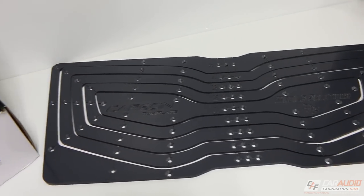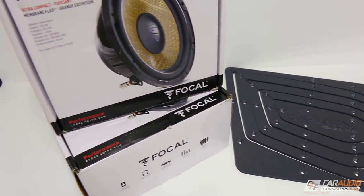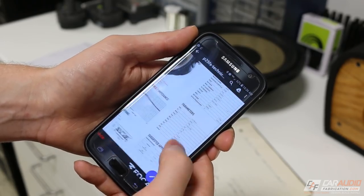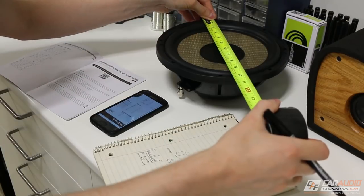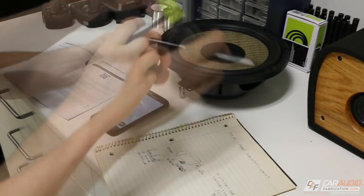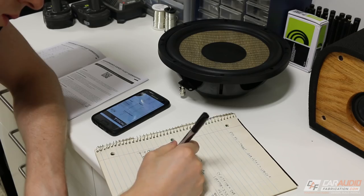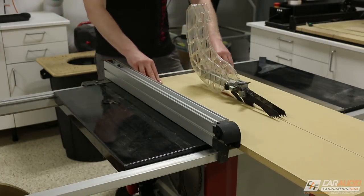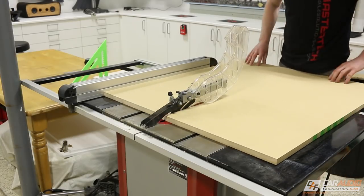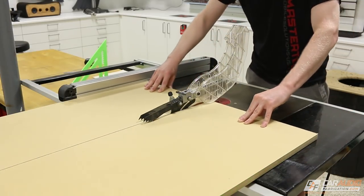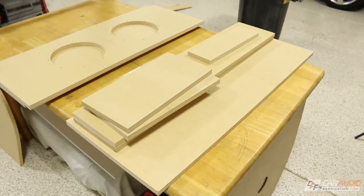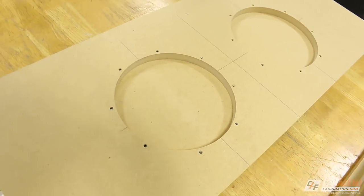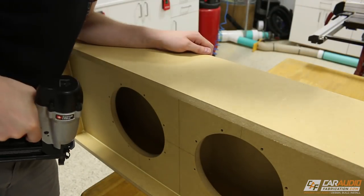For this project, I'm going to be using two of these Focal P25FS shallow-mount 10-inch subwoofers. I look at the specifications from the manufacturer and take some different dimensions in order to actually design my subwoofer enclosure and to get started with some of the basic fabrication. I'm going to go through these first few steps really quickly because I want to focus a little bit more on the advanced fabrication.